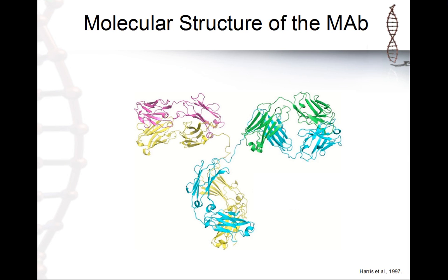Let's come to the molecular structure of an antibody. Here you can see the overall structure. First of all, we have a tail called the Fc — the fragment crystallizable part. Then we have the part where we attach to the epitope, called the Fab part — the fragment antigen-binding part. We have a heavy chain shown in yellow and blue.